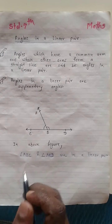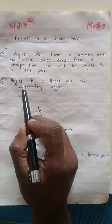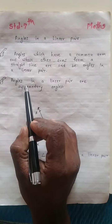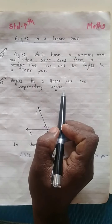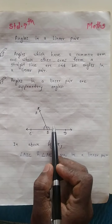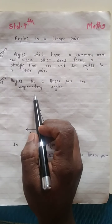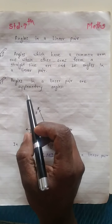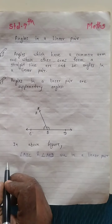These two angles are supplementary. Supplementary means the sum of measures of two angles is 180 degrees.